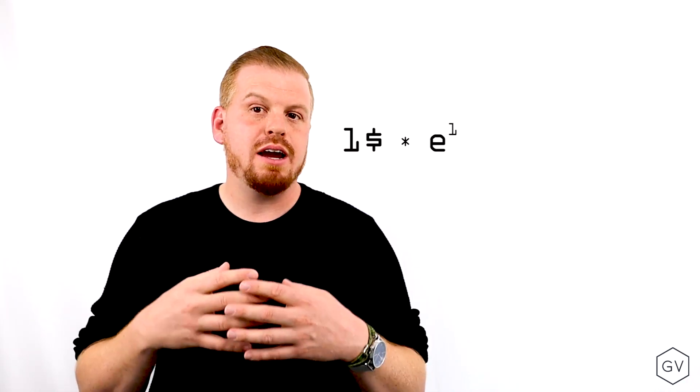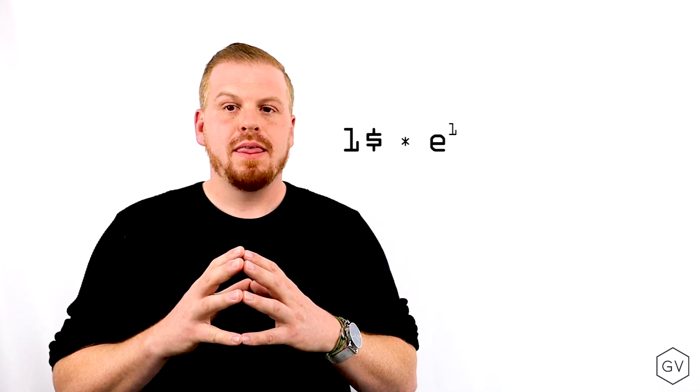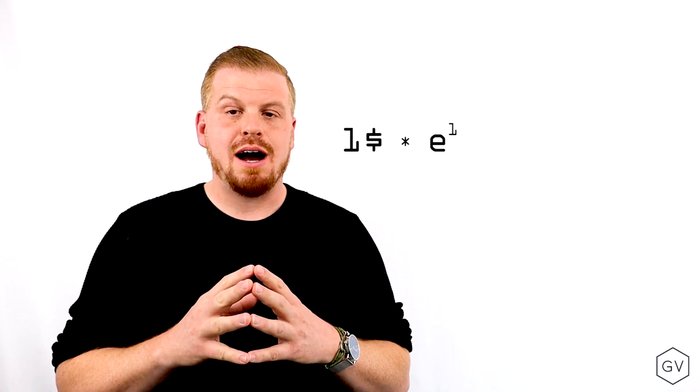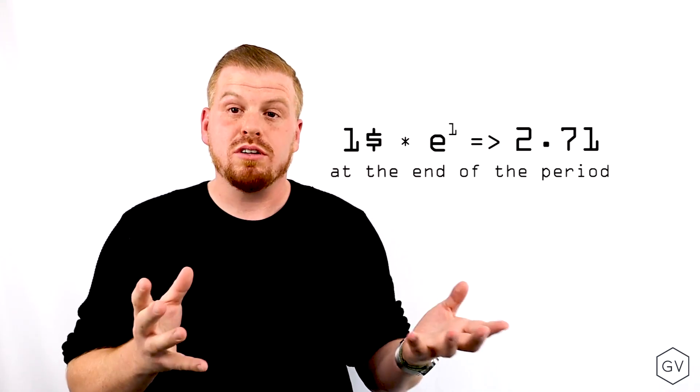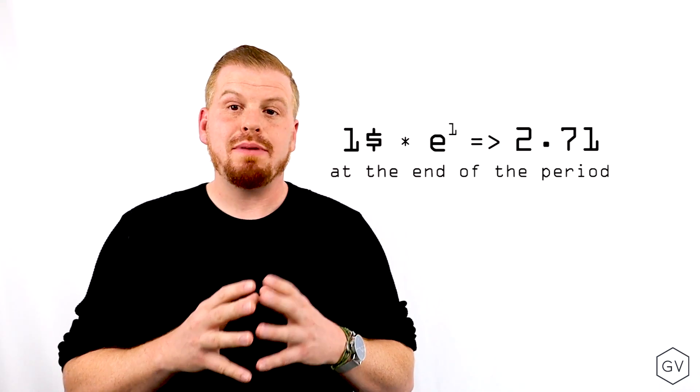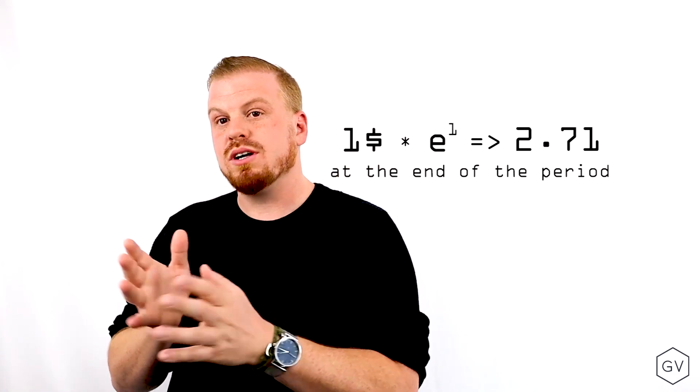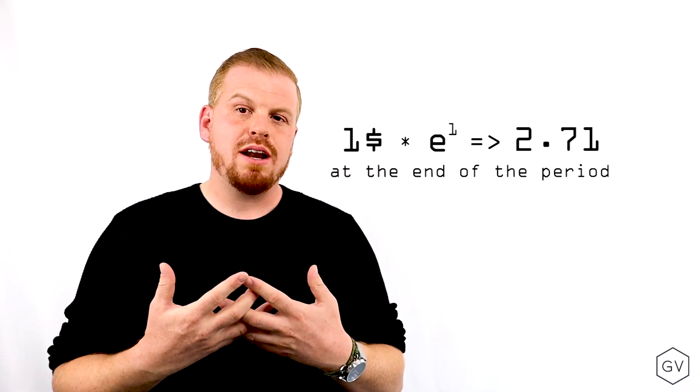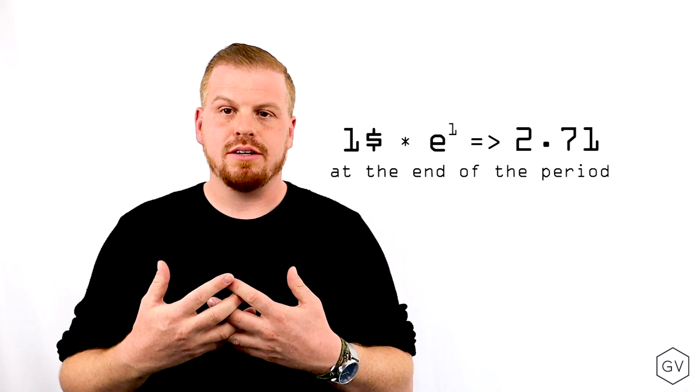then at the end of the period, I will have $2.71. So essentially my $1 will have grown from $1 to $2.71. So that is the rate of return continuously compounded.